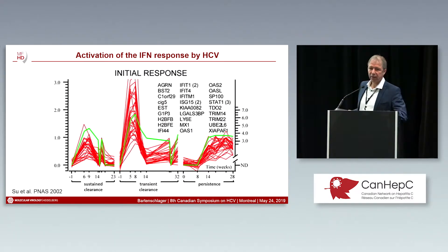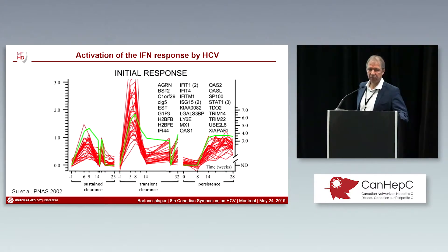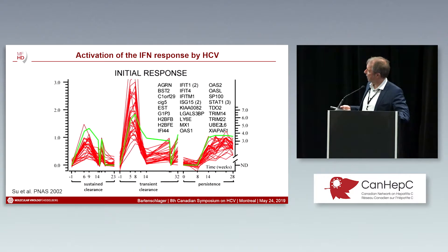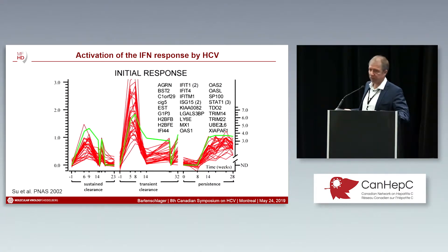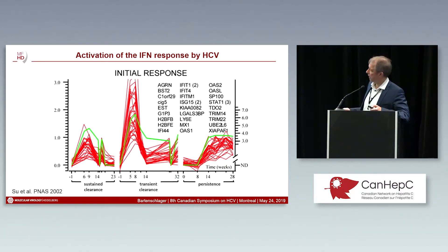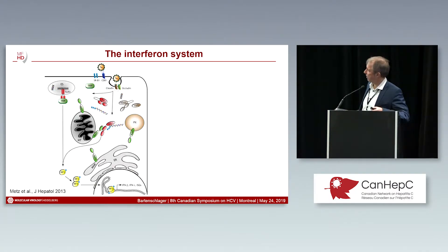When you look into the literature, you will find one of the landmark papers from Frank Shisari's lab, where he studied essentially the interferon response upon infection with HCV in three experimentally inoculated chimpanzees. You can see in pretty much all these cases, the interferon-stimulated genes — the ISGs — are upregulated, no matter whether the chimp was able to clear the infection or develop persistence. So that clearly shows the virus induces an interferon response, but in the case of persistence, it can overcome that.